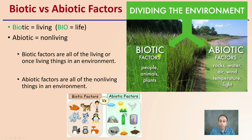Some quick examples of biotic factors — people, animals, and plants. While abiotic factors include rocks, water, and air, but also consider wind, temperature, and light — these still fall under the abiotic category.